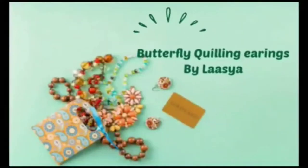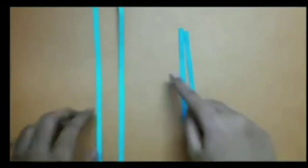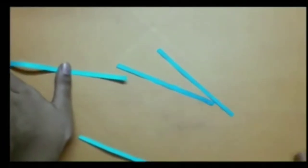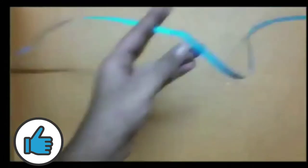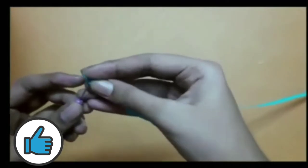Butterfly quilling earrings by Lasya. Take four strips of quilling paper of any color you want and glue them in the order of one strip plus half strip plus one strip and half strip. Then using the quilling tool, wind the strips.